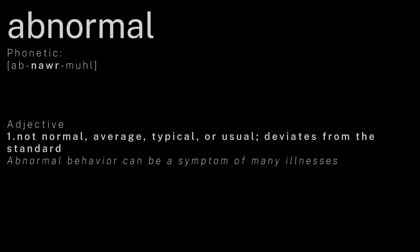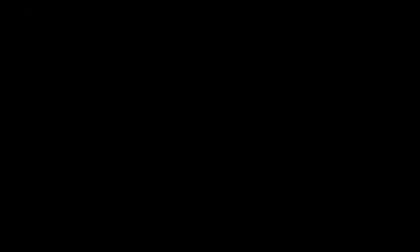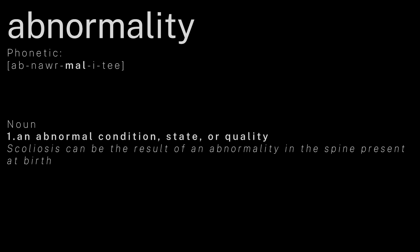Our twenty-second word is abnormal, which is an adjective that means not normal, average, typical, or usual — deviates from the standard. For example, abnormal behavior can be a symptom of many illnesses. Our twenty-third word is abnormality, which is a noun that means an abnormal condition, state, or quality. For example, scoliosis can be the result of an abnormality in the spine present at birth.